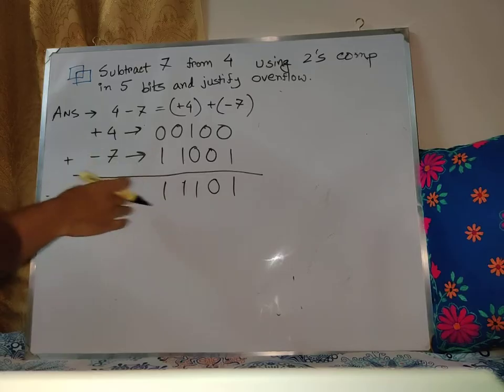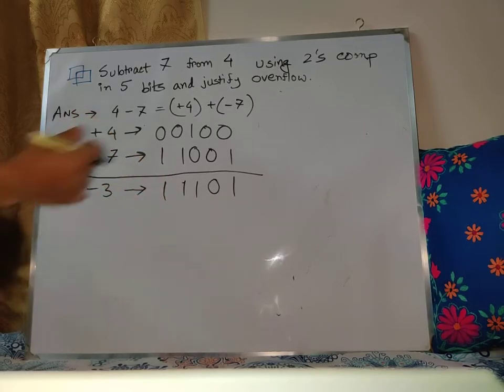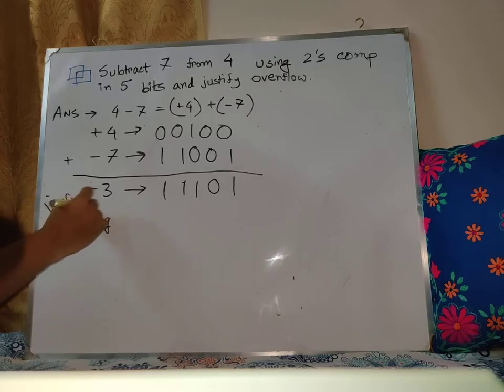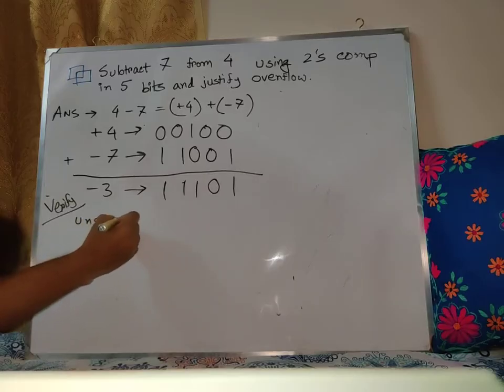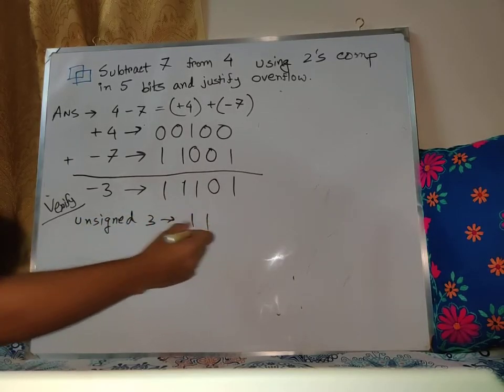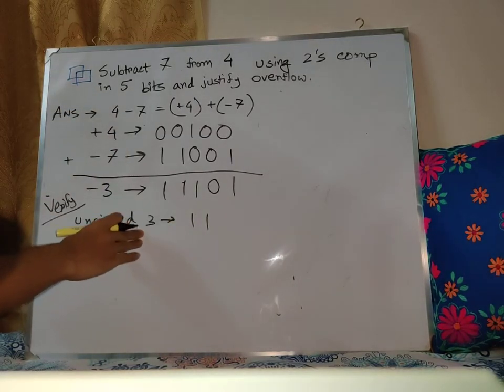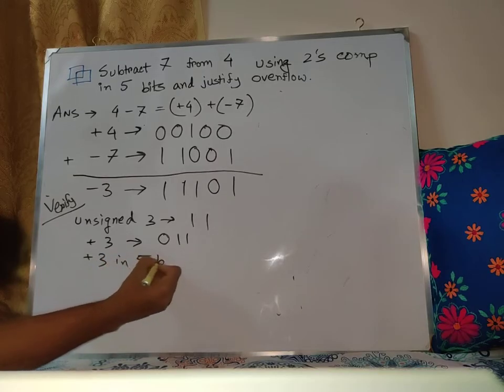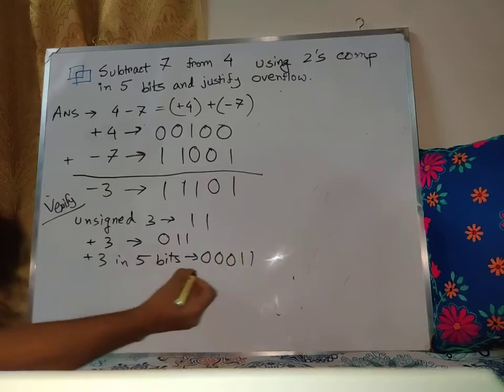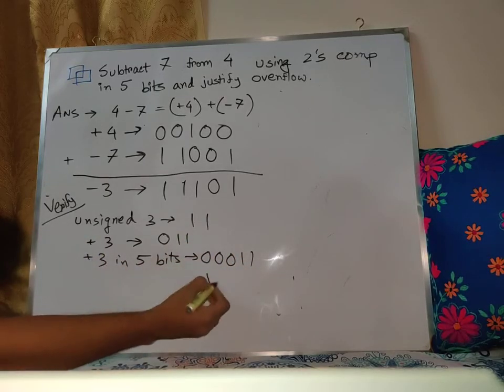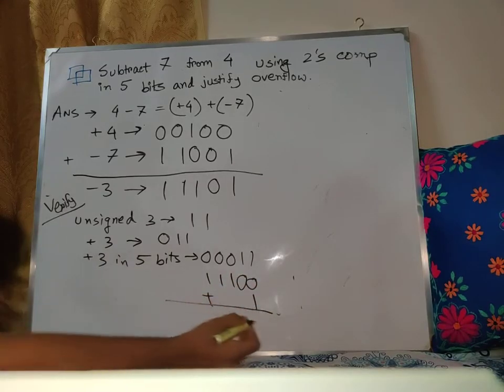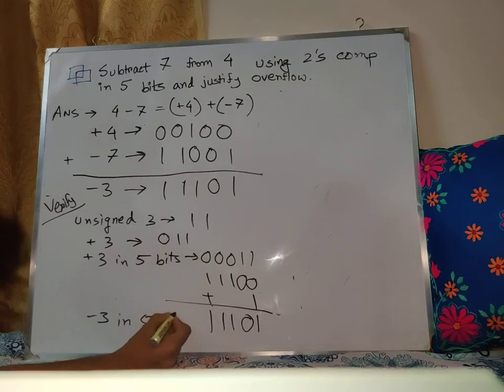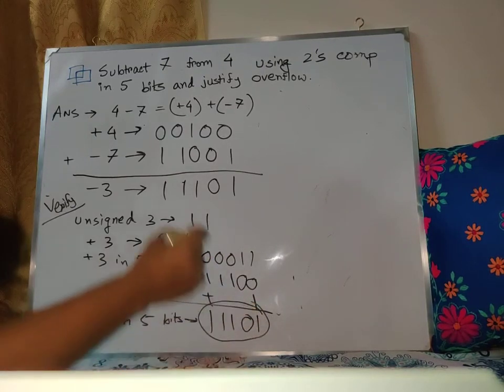This is just verification, so we're gonna verify. So unsigned 3 is just 11. Then plus 3 is 011. Plus 3 in 5 bits is 00011. Now take the two's complement to get minus 3 in 5 bits. Taking this number's two's complement gives us 11101. So minus 3 in 5 bits is 11101.